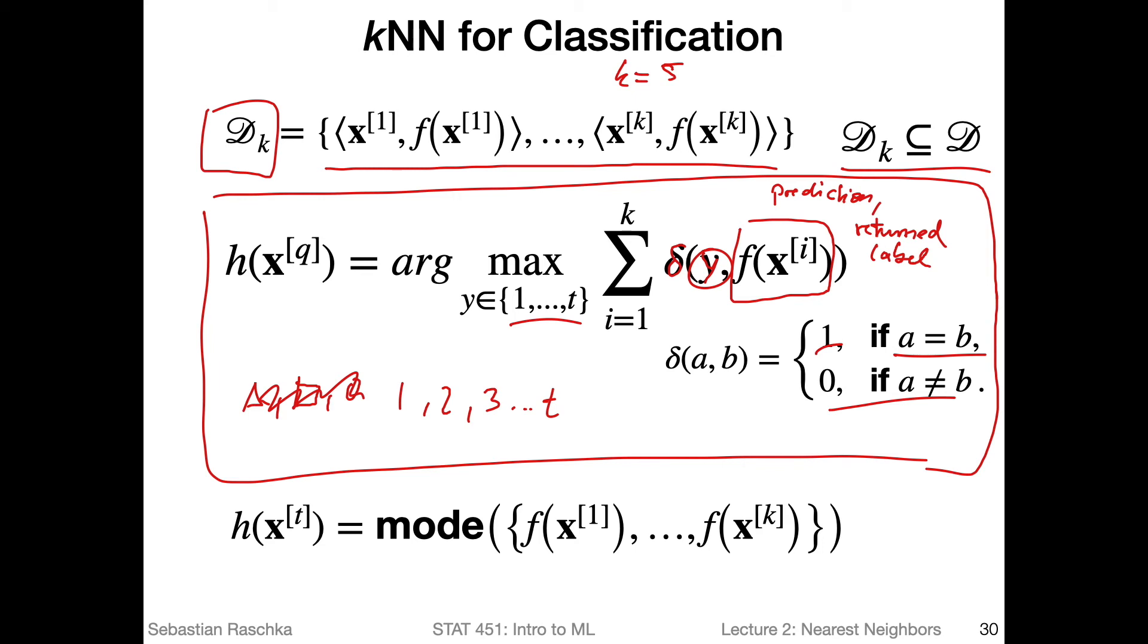Now what we do here is we compare, in a way we search for the class label that maximizes the function arguments here. We search for the function argument that maximizes this sum here. So if I have my neighbors, my five neighbors, let's say I have among my neighbors the class labels 1, 1, 2, 3, 1, 5. Yeah, so let's say I have five neighbors like that. And also note that we have the sum here. So I sum over the five neighbors and see which one gives me the most, let's say the most, the highest, the largest sum.